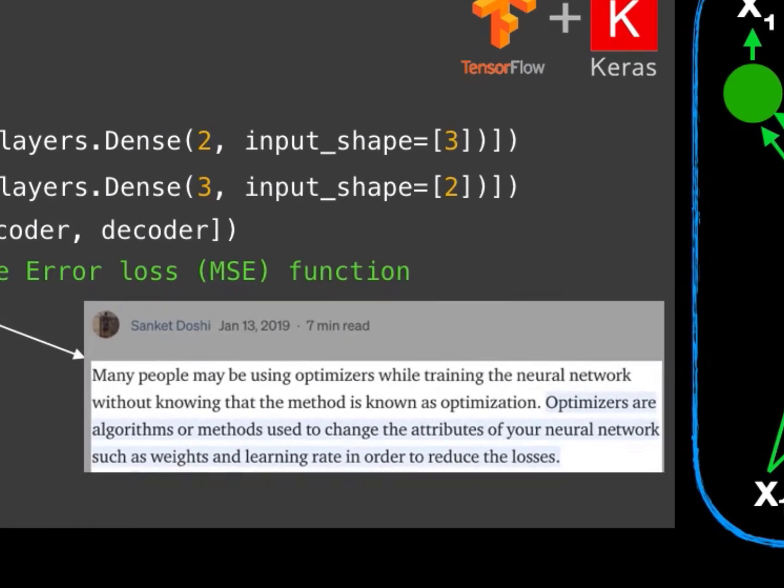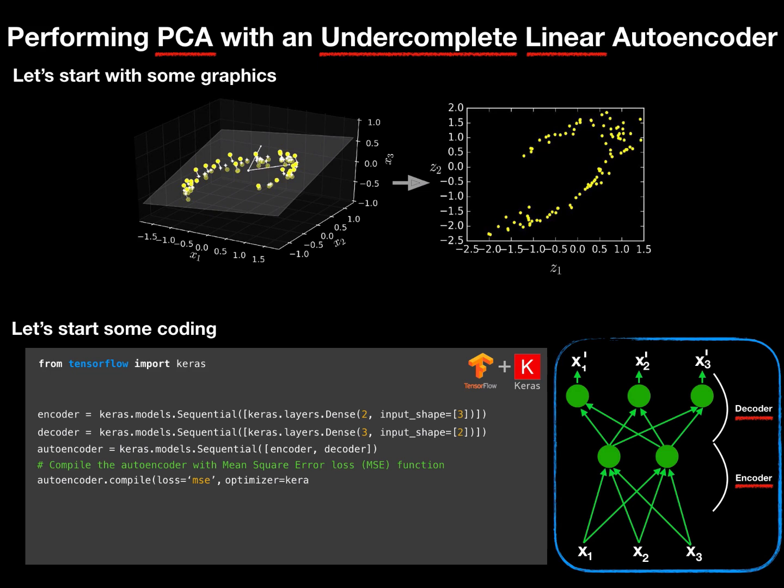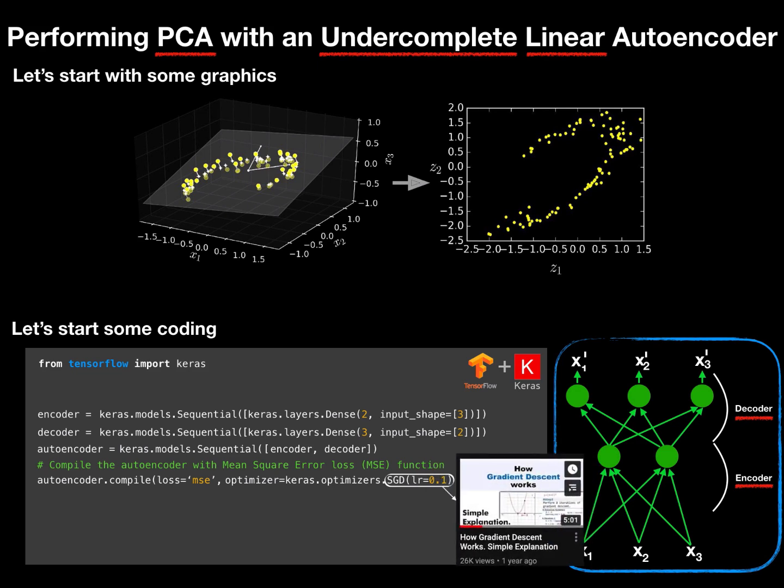What is an optimizer? Optimizers are algorithms or methods used to change the attributes of your neural network, such as weights and learning rate, in order to reduce the losses. Okay, we need to define something here, and we select one of the most popular combinations of stochastic gradient descent and learning rate of 0.1. Learning rate defines how quickly our model, in our case, our autoencoder, learns from the data. To get clear intuition how it works and how it is being calculated, check a separate special video dedicated for this question only.